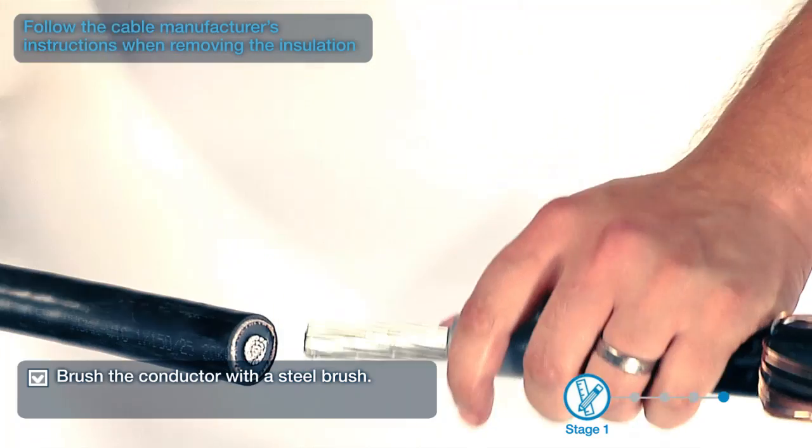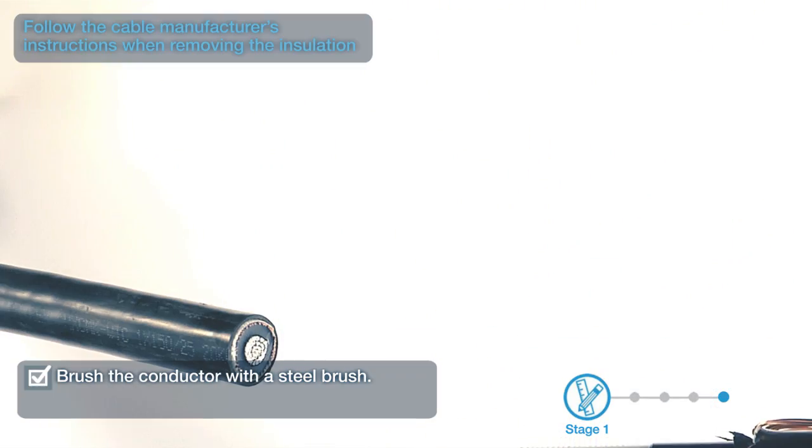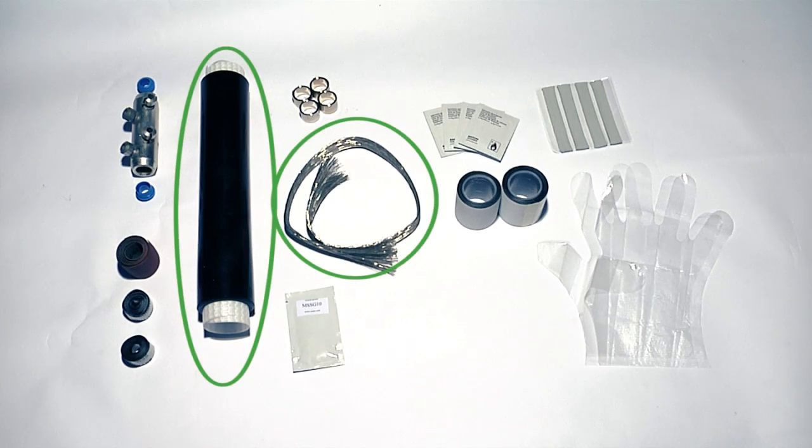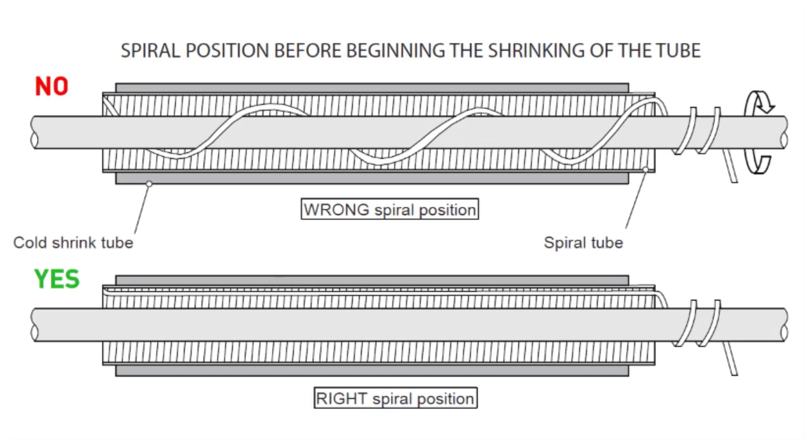Brush the conductor with a steel brush. Make sure that the spiral is positioned correctly before installing the termination.